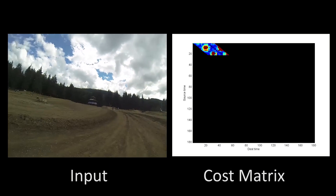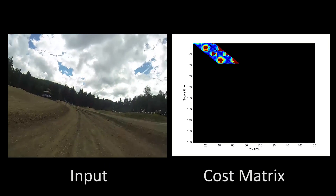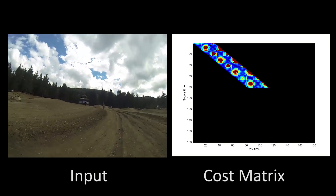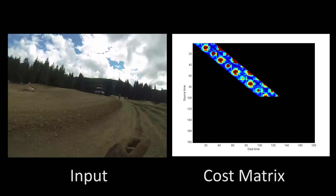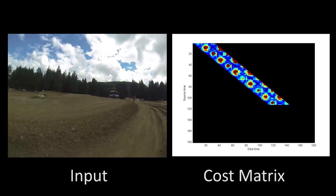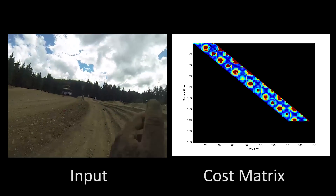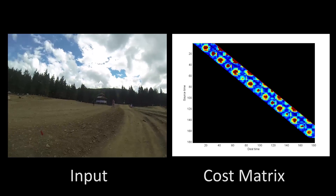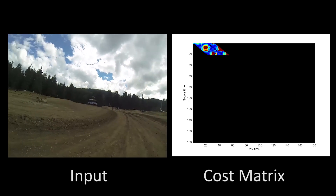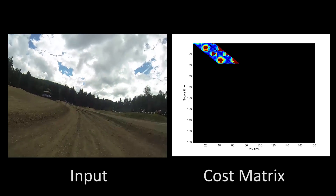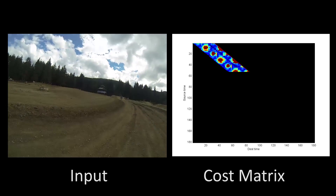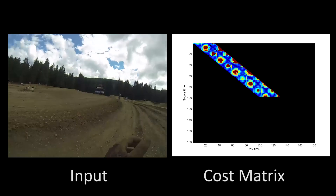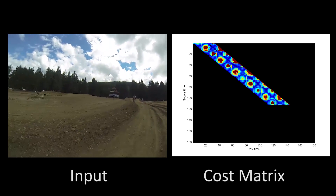As the video is being processed, we track frames and compute the costs to transition from each frame to a number of following frames. The cost is related to the amount of visual motion that would be incurred by each transition. Here we show the costs as a matrix being filled for 6 seconds of an input video captured during a 5K run using a body-mounted GoPro camera.